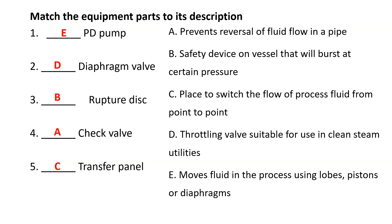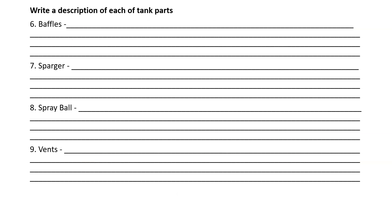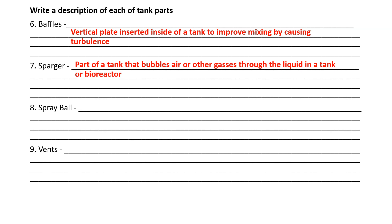You do need to know all of these definitions. Baffles are a part of a tank — they are added to the inside of a tank in order to improve mixing by causing turbulence. These are usually like wall plates inside of a tank. A sparger is a part of a tank that bubbles air or other gases through the liquid in a tank or reactor. It can be used to measure depth, but a lot of times it's used to introduce gases to the reaction.